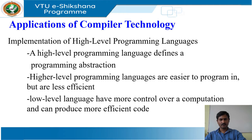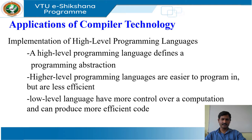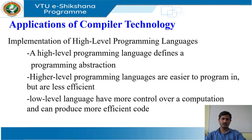A high-level programming language defines a programming abstraction. The programmer expresses an algorithm using the language and the compiler must translate that program to the target language. Generally, higher-level programming languages are easier to program in but are less efficient — that is, the target programs run more slowly.